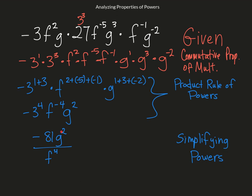So that's negative 81 g squared. Simplifying negative 3 to the fourth to negative 81 is part of simplifying powers, but moving the f to the negative 4 to the denominator, that is called the negative exponent rule.